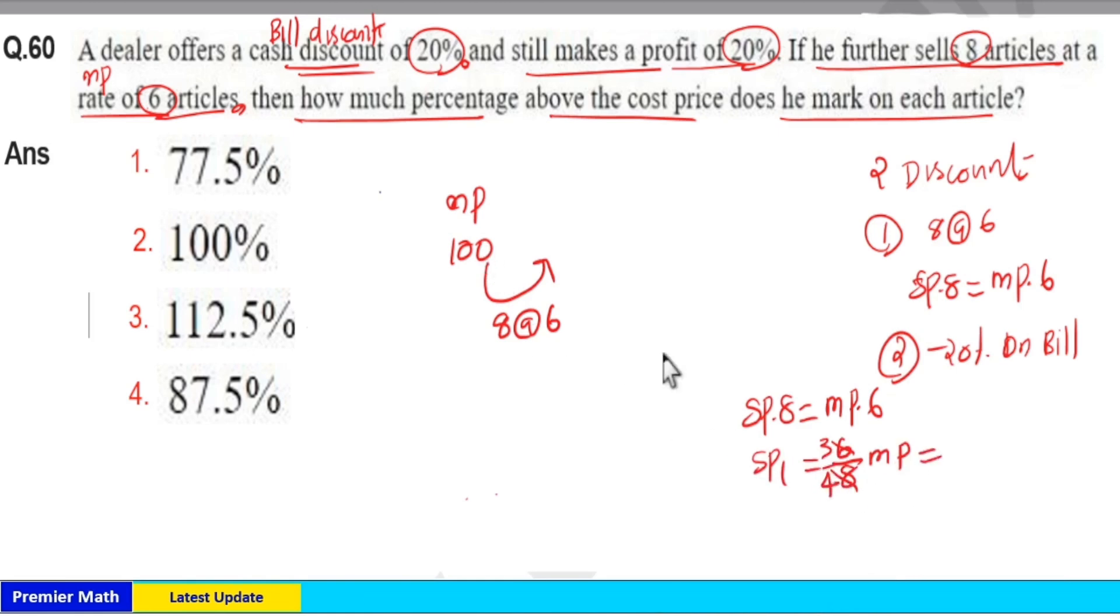Now if you consider marked price as 100, then 3 by 4 of 100 rupees is your selling price of 1 article. 4 goes 25 times in 100, 25 into 3 is 75. So 75 rupees is your bill amount.